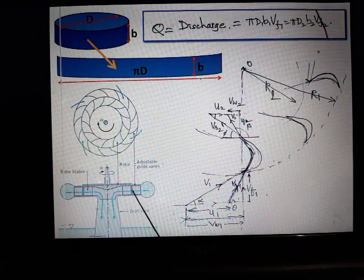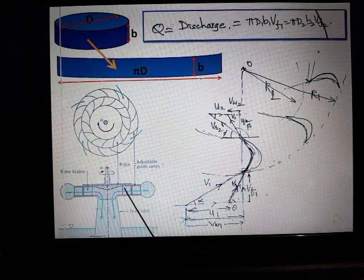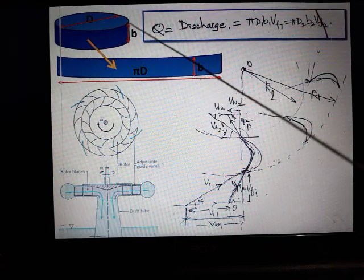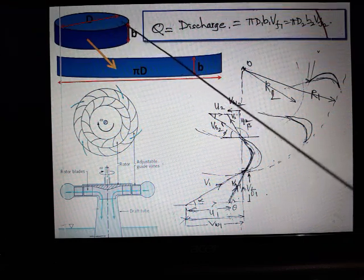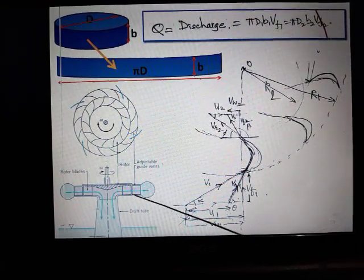Here, what you should observe is that at the entry, water enters this particular wheel. If I show a slightly isometric view, it will be something like this. Entry is being made through this width of the blades.